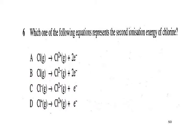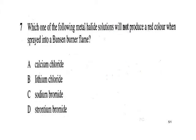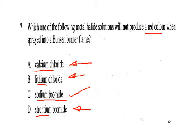Pause and have a go. The second ionisation energy: we're going to have gaseous X⁻ ions forming gaseous X²⁻ ions plus an electron — so C is the answer. Pause and have a go: the second ionisation energy will not produce a red colour. Sodium of course has the yellow flame colour. Calcium, lithium, and strontium all have a red colour imparted to the flame.